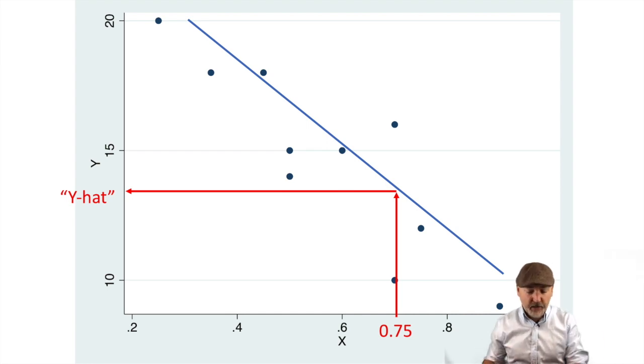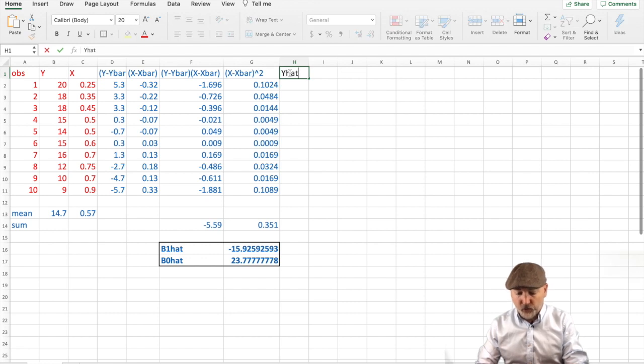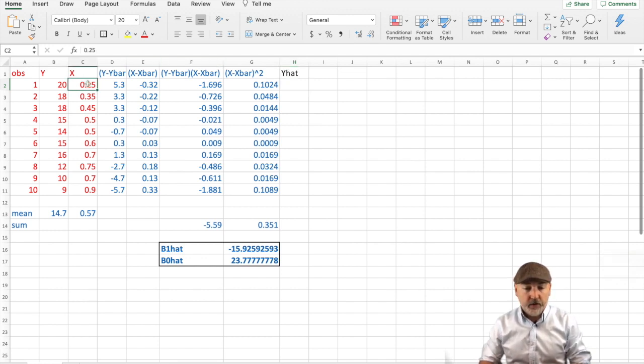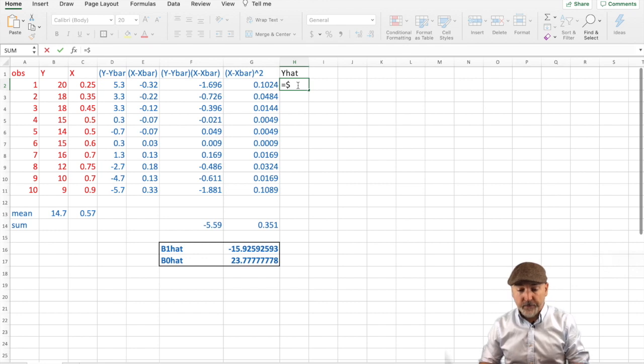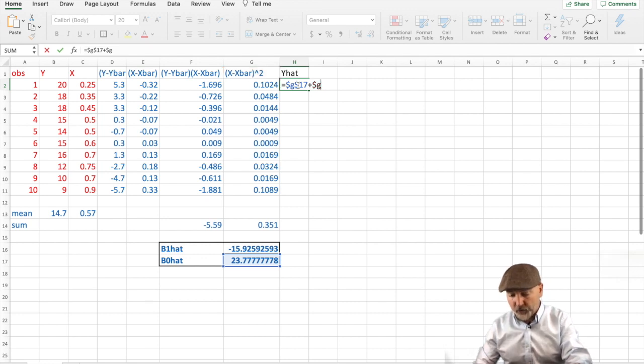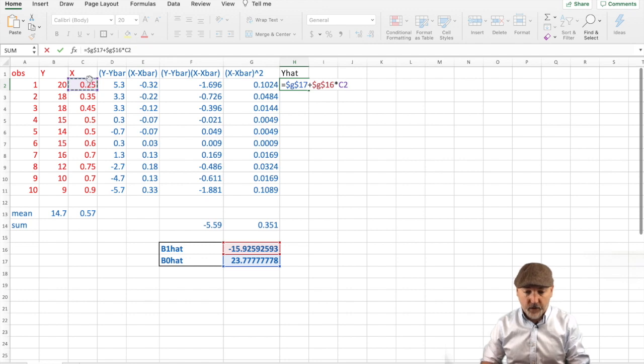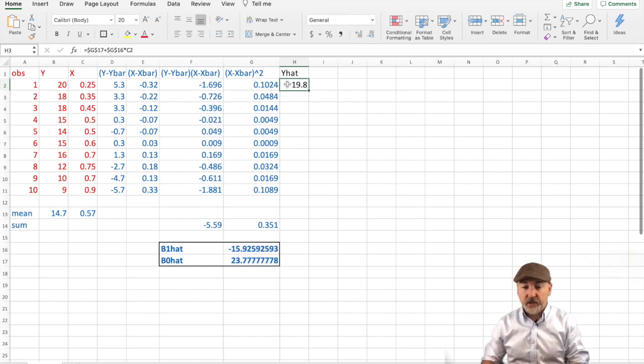Let's go back over into Excel. We're going to need to create a new column, call it our y-hat column. Each observation is going to be based on the associated level of x and the same slope and intercept values. We could just plug the numbers in, but let's use the Excel option of fixing those cells in our formula. So we go dollar sign column g, always row 17.